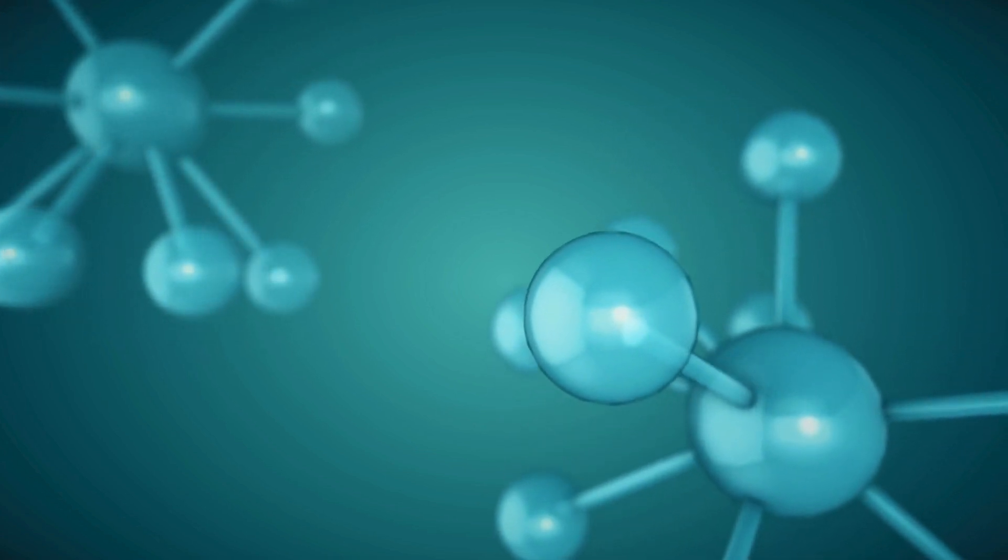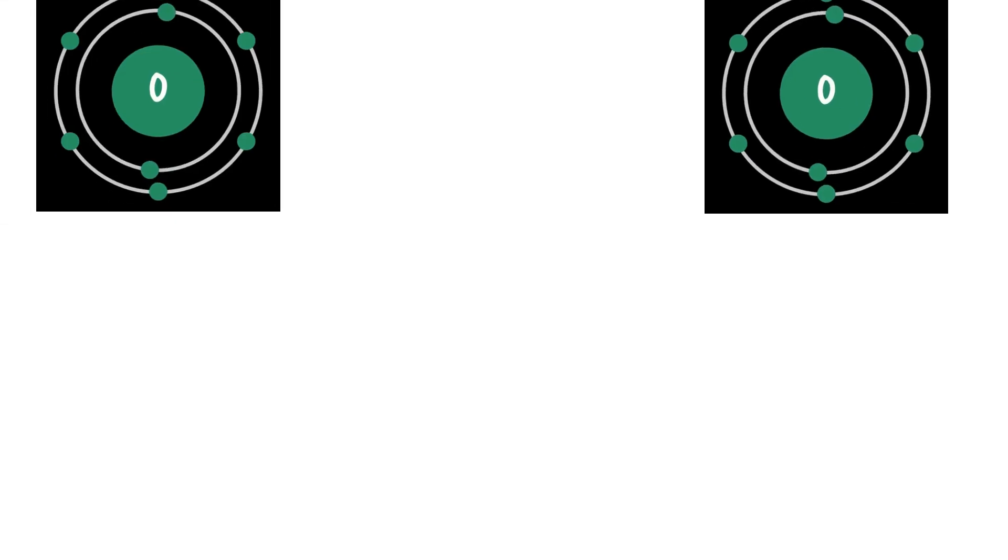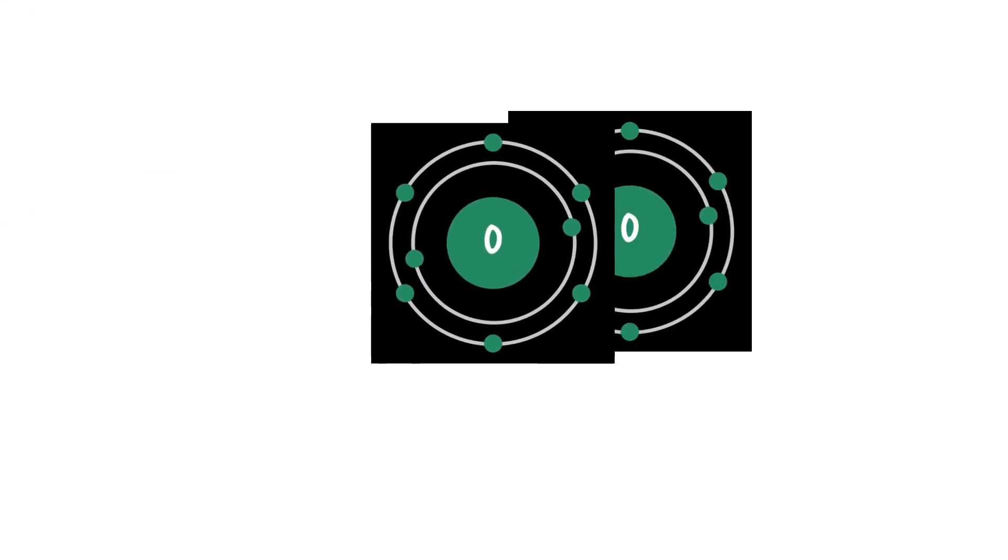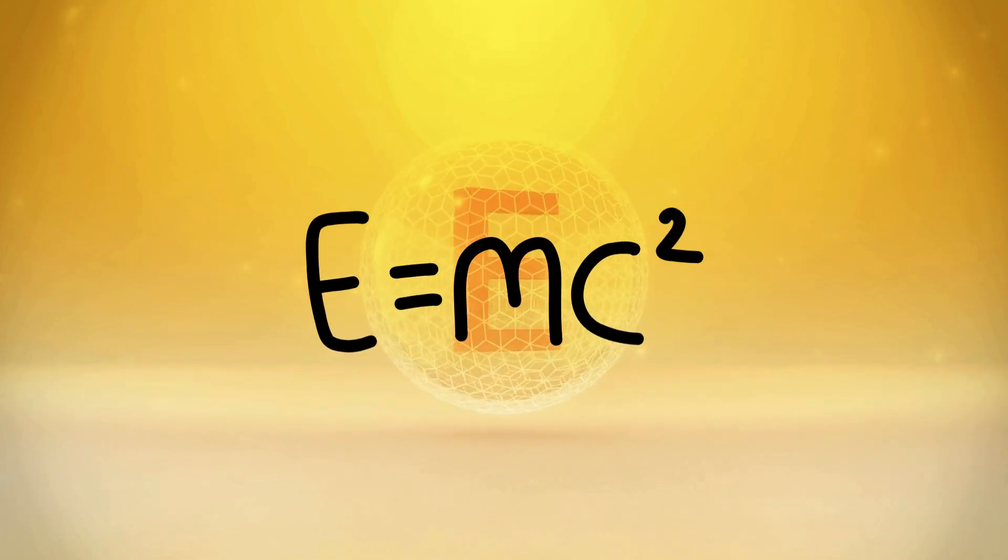This brings us to the concept of binding energy and mass defect. When two oxygen atoms bond together to form an O2 molecule, energy is released in the form of binding energy. According to Einstein's equation, E equals mc squared, energy has mass.